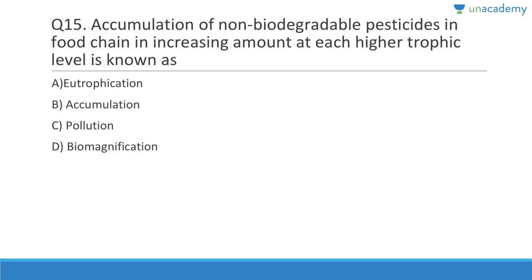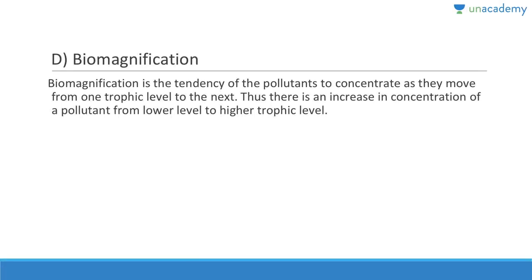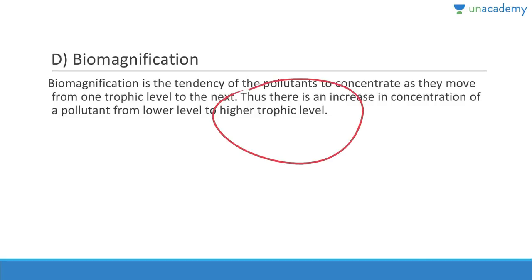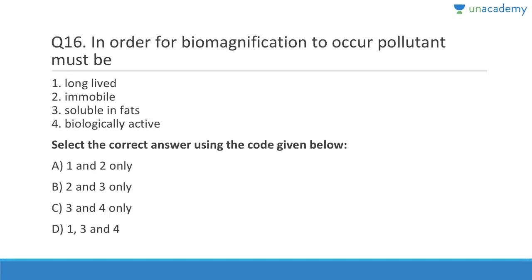Question 15: Accumulation of non-biodegradable pesticides in a food chain in increasing amounts at each higher trophic level is known as biomagnification. This especially affects birds — their eggshells, particularly of eagles, become very brittle because of DDT. Biomagnification is a tendency of pollutants to concentrate as they move from one trophic level to the next, increasing in concentration from lower to higher trophic levels.